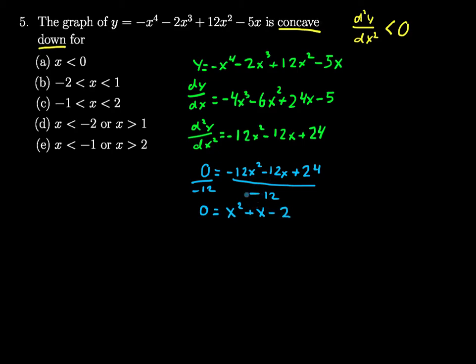And easily factored, we know that this is going to end up equaling x plus 2 times x minus 1.